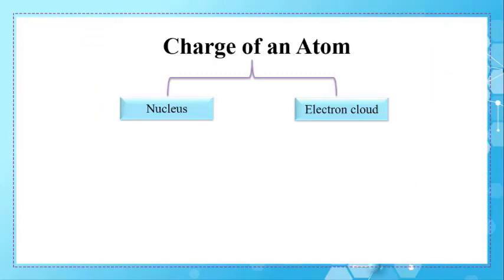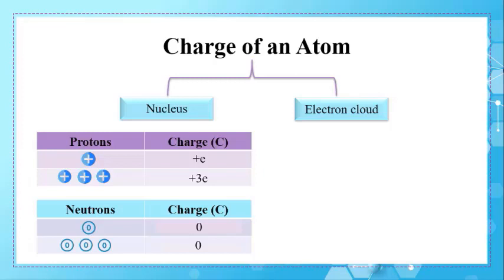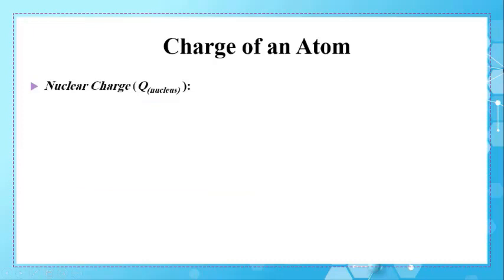Starting with the nucleus: the subatomic particles that constitute the nucleus are the protons and the neutrons. The charge of one proton is +E, so the charge of three protons is +3E. For a neutron — if one neutron has zero charge, then three neutrons also have zero charge, and even 100 neutrons have no charge. As the name suggests, neutrons are neutral. We can conclude that neutrons do not contribute to the charge of the nucleus, while protons define its entire charge.